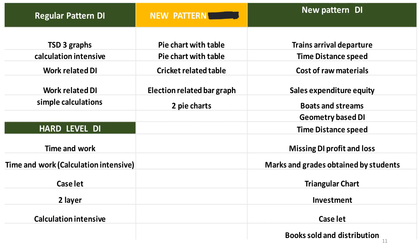If you are familiar with traditional DI, we know we have pie chart, bar graph, line graph and all that. Now there is something called arithmetic DI. Arithmetic DI has predominantly started coming in banking exams — it was there in IBPS PO and SBI PO — and that is the reason the level of difficulty is quite higher when you talk about arithmetic-level DI.